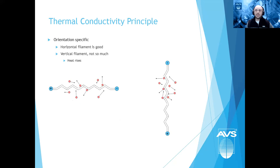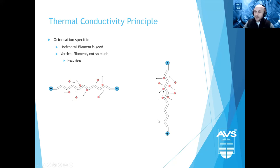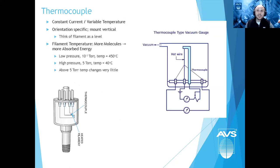Pirani or convection-enhanced Pirani gauges use constant temperature — the filament is kept at a constant 105–150°C — and based on molecular interaction absorbing energy, the gauge requires higher or lower current to maintain that constant temperature. Molecules absorb energy at different rates, which is why gas composition matters; these gauges are calibrated in nitrogen. Thermal conductivity gauges with filaments are also orientation specific — they typically prefer to be horizontal. If vertical, heat rises and part of the filament is not properly interacting with molecules, skewing the measurement.